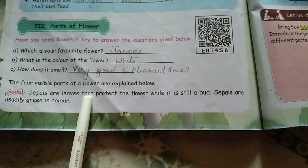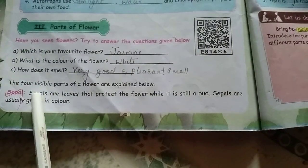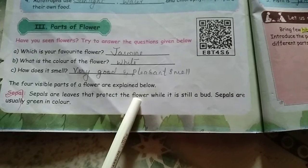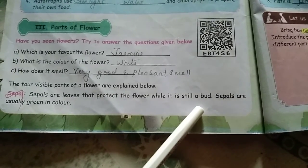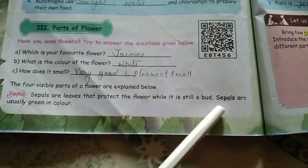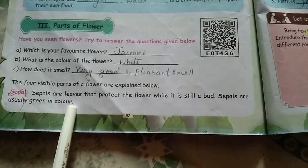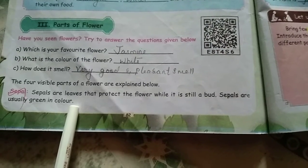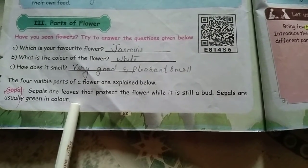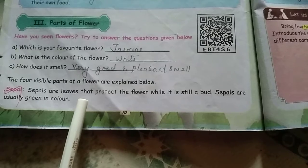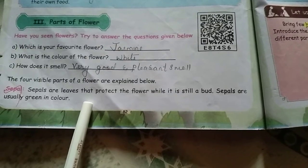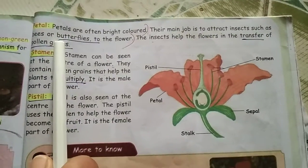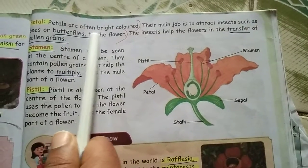There are some parts in the flower. The first one is the sepal. It is a leaf that protects the flower while it is still a bud. Sepals are usually green in color — they are like a kind of leaf that protects the flower from the bud stage.